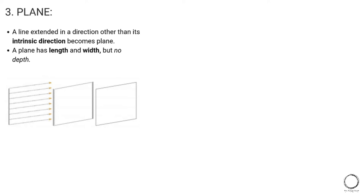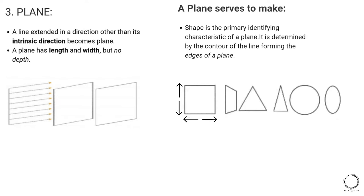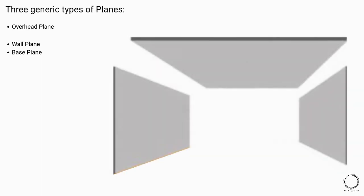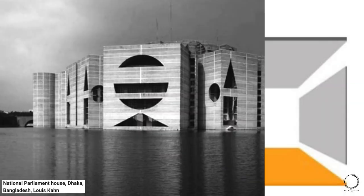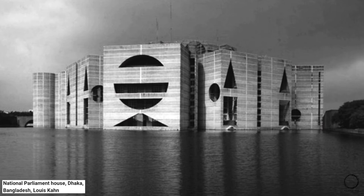Moving ahead, a line extended in a direction other than its intrinsic direction becomes a plane. A plane has length and width but no depth. Shape is the primary identifying characteristic of a plane, forming its edge. There are three generic types of planes: overhead plane, wall plane, and base plane.